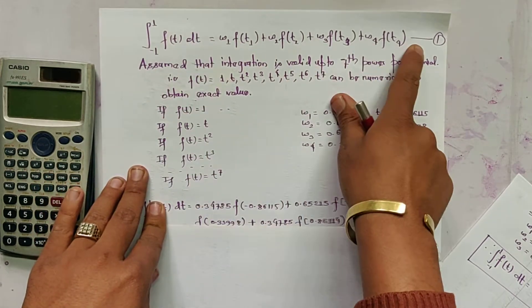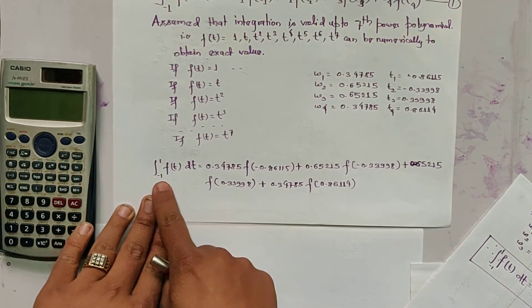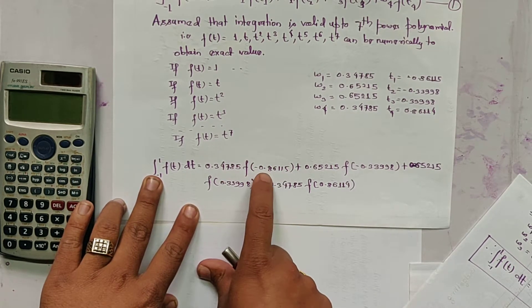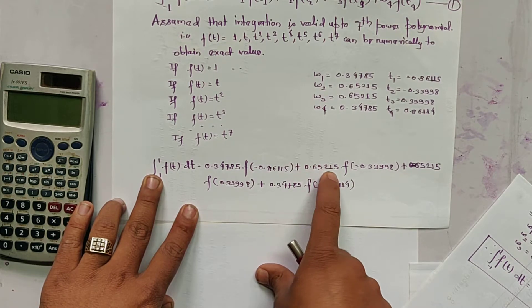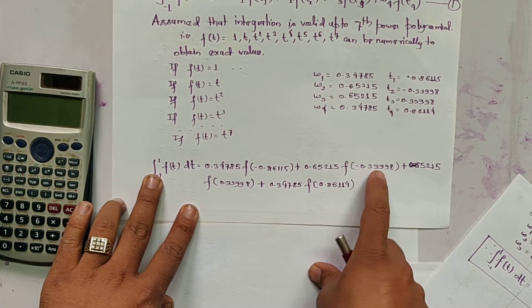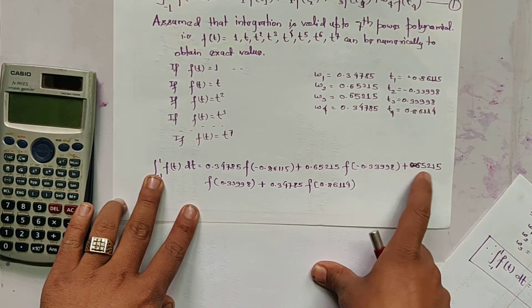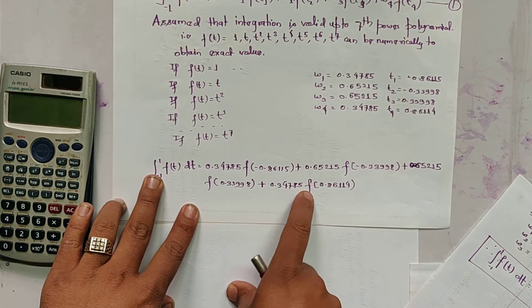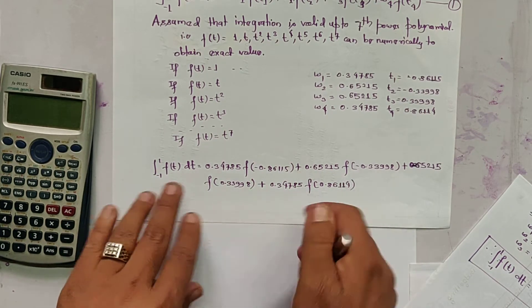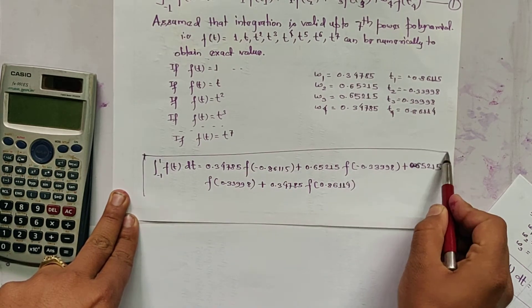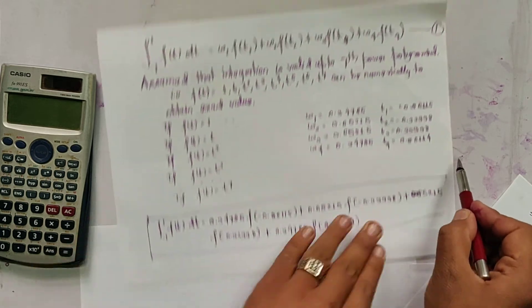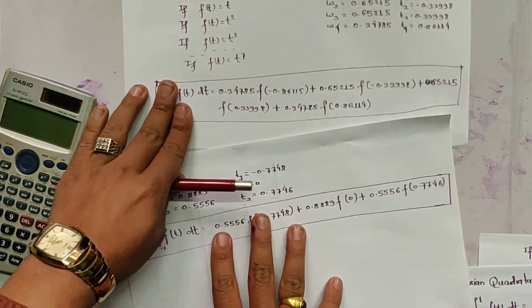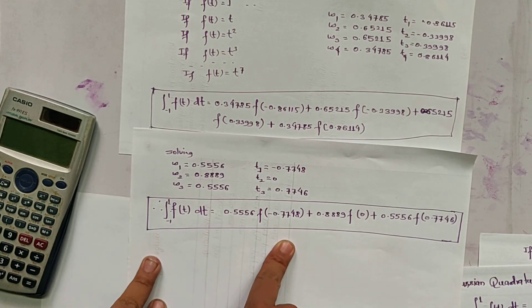By substituting these values into the equation, we get the Gaussian four-point formula: the integral from minus 1 to 1 of f(t) dt equals 0.34785·f(−0.86115) + 0.65215·f(−0.33998) + 0.65215·f(0.33998) + 0.34785·f(0.86114). This is the equation for Gaussian four-point quadrature. In the next video, we will use these two formulas to calculate the integration of a function. Thank you and bye-bye.